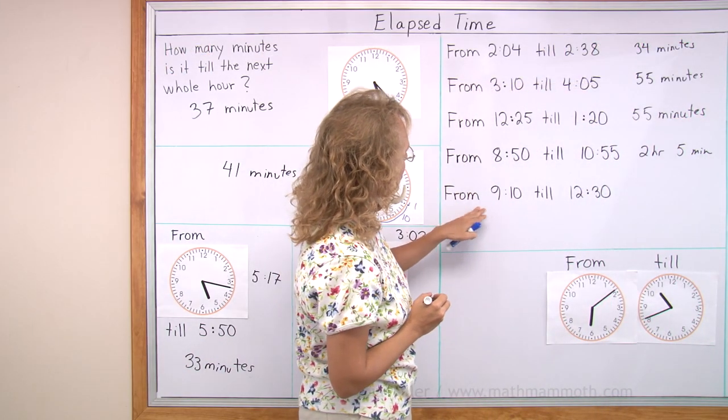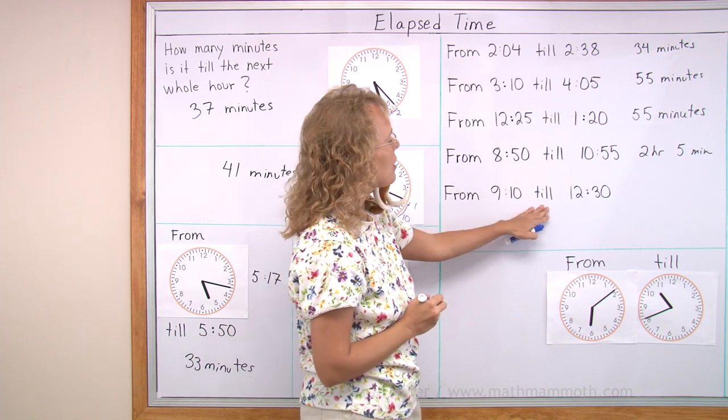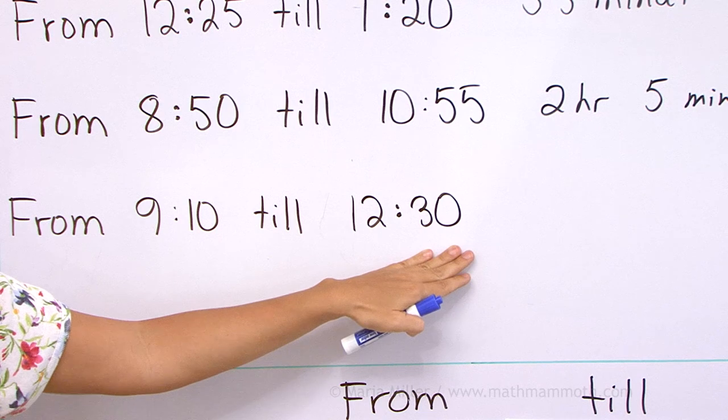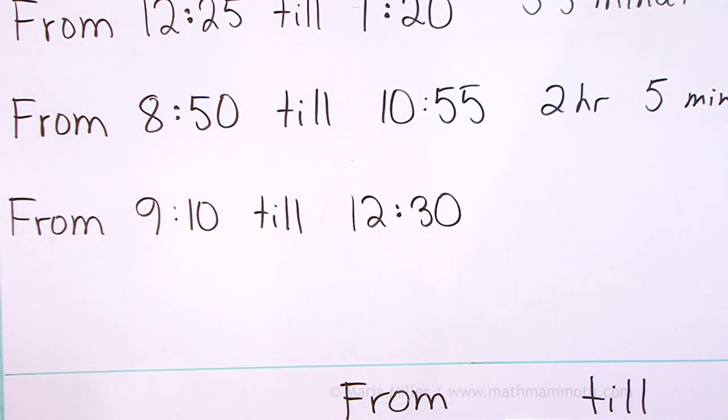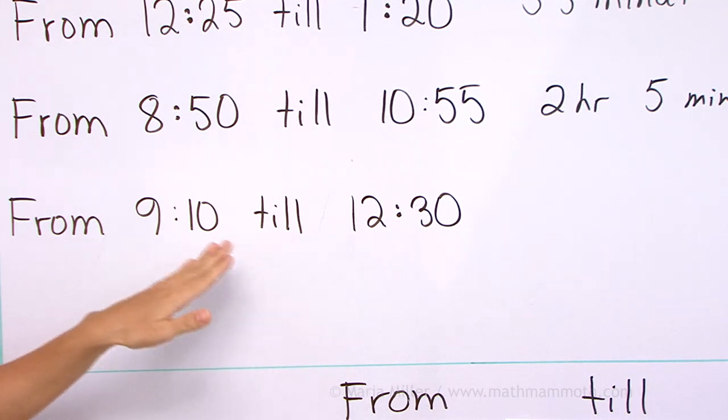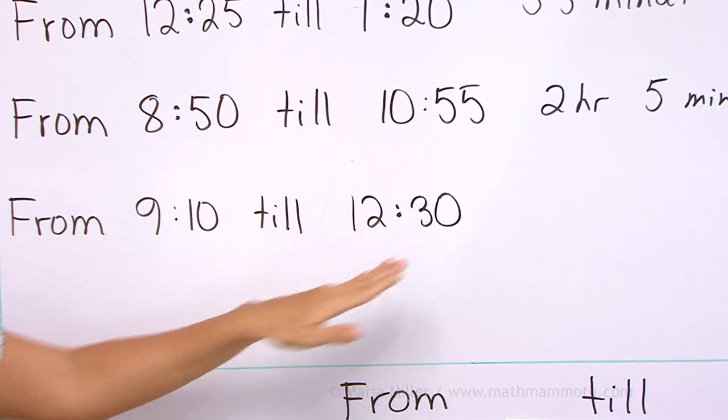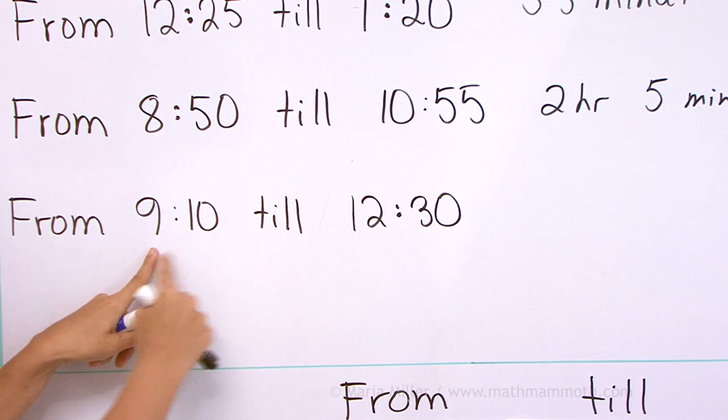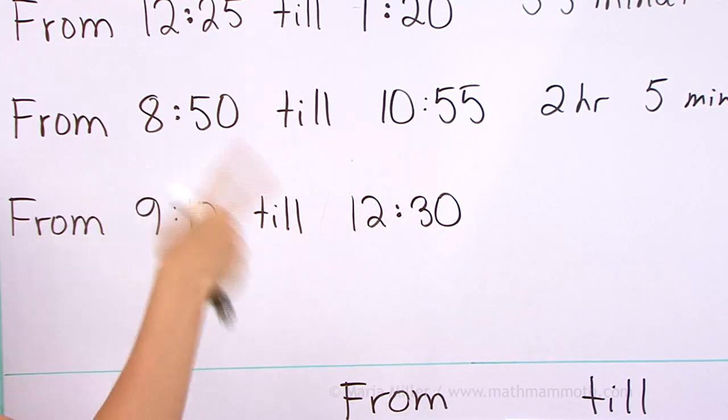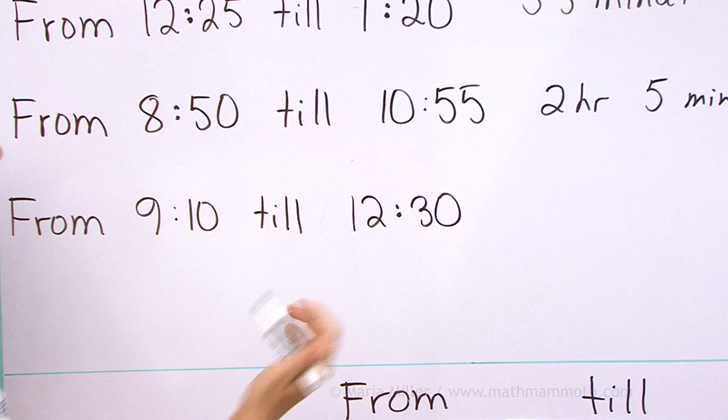Lastly, from 9:10 till 12:30. Think about it for a moment before I write the answer. 9 hours, 12 hours, 10 minutes, 30 minutes. You can just subtract. From here to here is three hours, and then from here to here, 20 minutes. Three full hours, and then also 20 minutes.